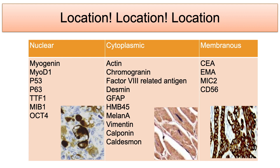Membranous reactivity is expected for receptors like EGFR, adhesion molecules like E-cadherin, and other surface molecules. This category includes virtually all cluster of differentiation markers: CD3, CD4, CD5, and CD20. Occasionally, membranous reactivity may be difficult to distinguish from cytoplasmic signal. This distinction is important for molecules where only membranous reactivity counts as specific, such as HER2 and EGFR.